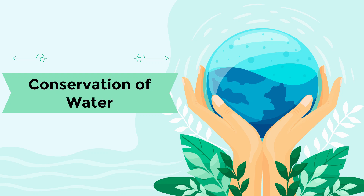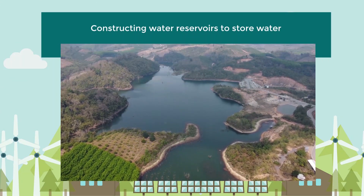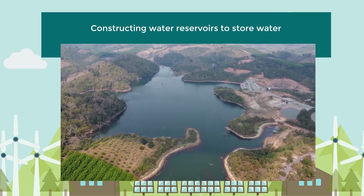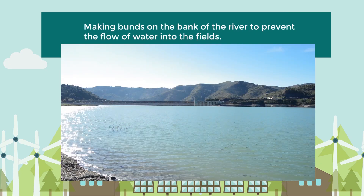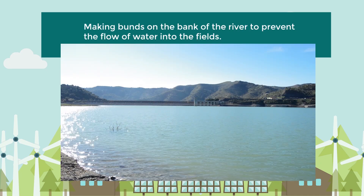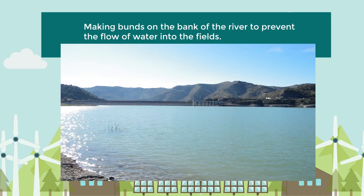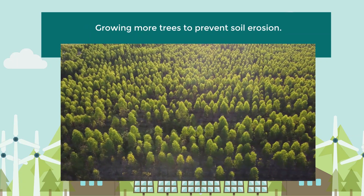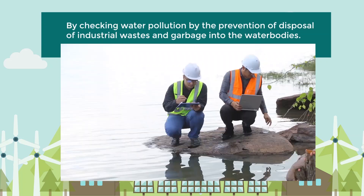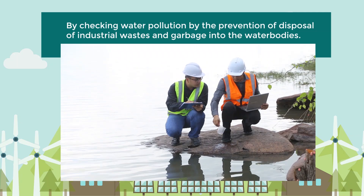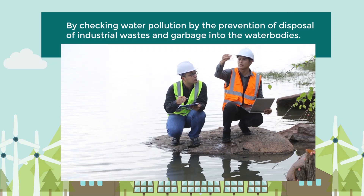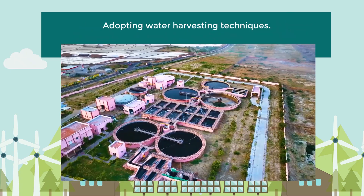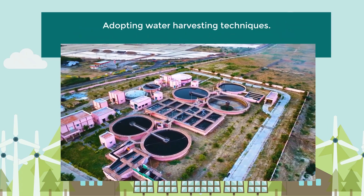Let us look at the measures to conserve water. Constructing water reservoirs to store water, making bunds on the bank of the river to prevent the flow of water into the fields, growing more trees to prevent soil erosion, checking water pollution by prevention of disposal of industrial waste and garbage into water bodies, and adopting water harvesting techniques.